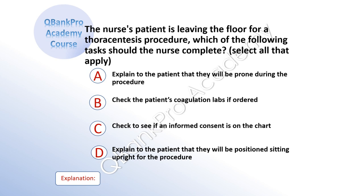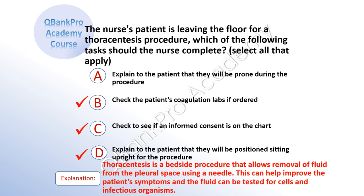The nurse's patient is leaving the floor for a thoracentesis procedure. Which of the following tasks should the nurse complete? Select all that apply. A, explain to the patient that they will be prone during the procedure. B, check the patient's coagulation labs if ordered. C, check to see if an informed consent is on the chart. D, explain to the patient that they will be positioned sitting upright for the procedure. Explanation: Thoracentesis is a bedside procedure that allows removal of fluid from the pleural space using a needle. This can help improve the patient's symptoms and the fluid can be tested for cells and infectious organisms.